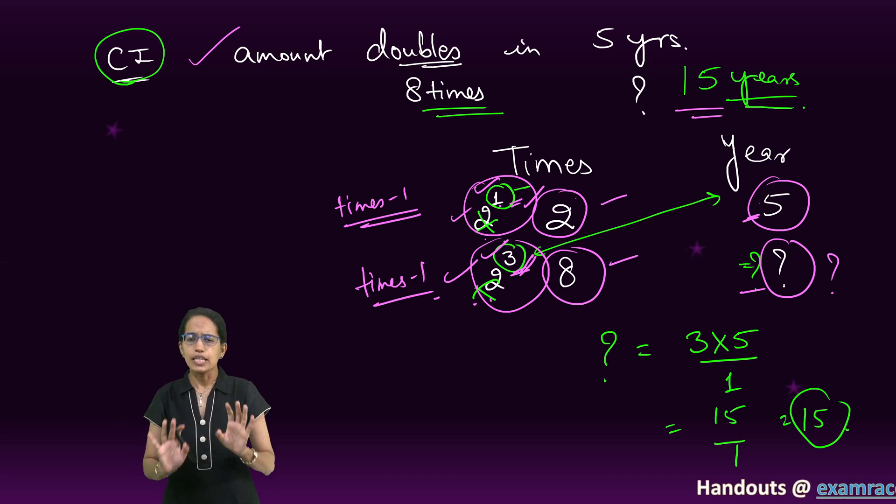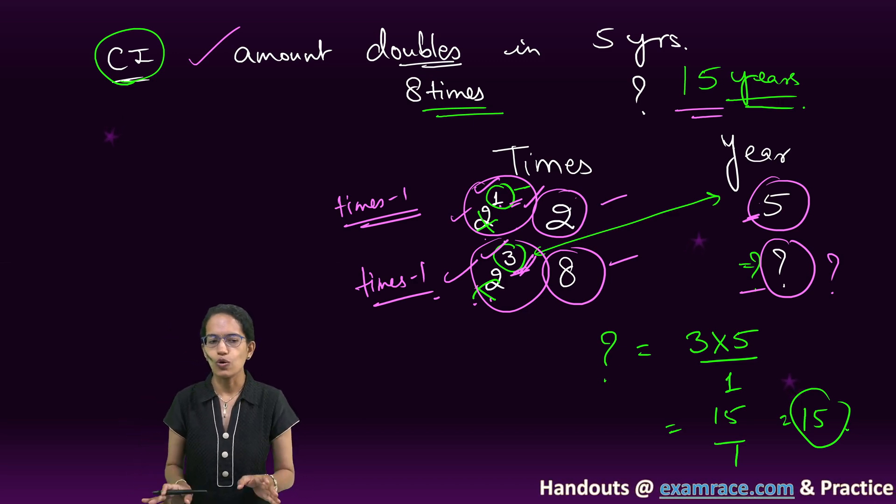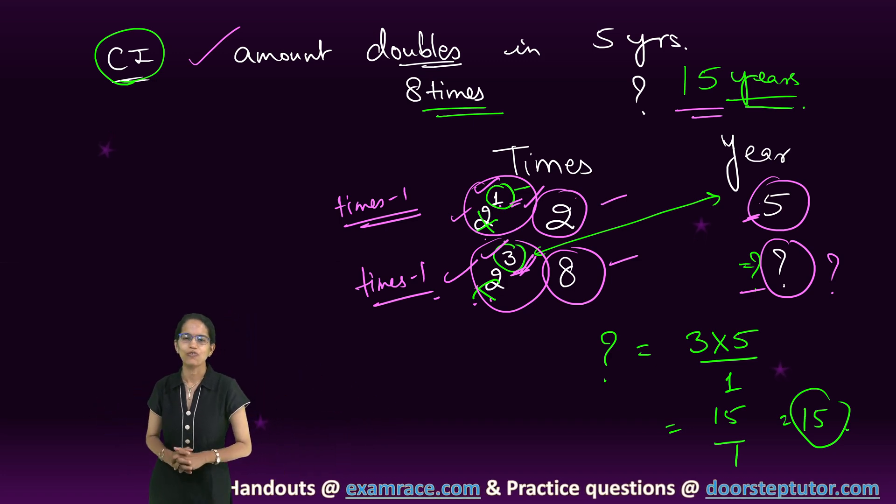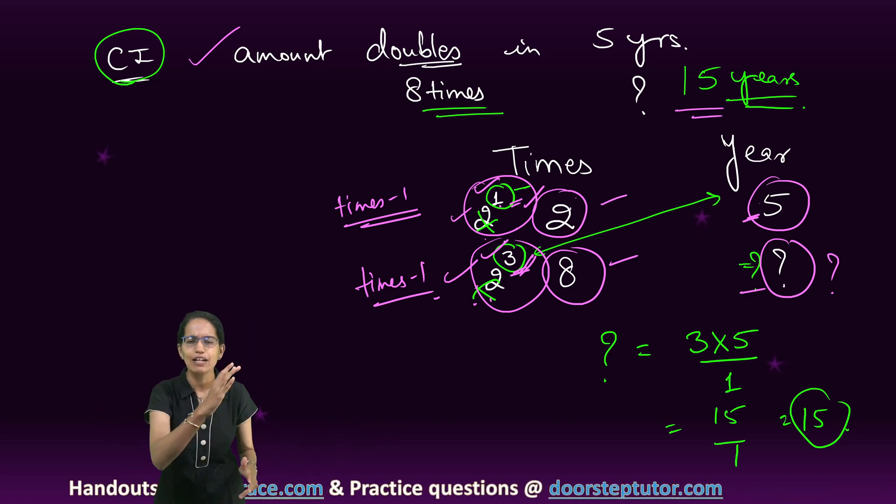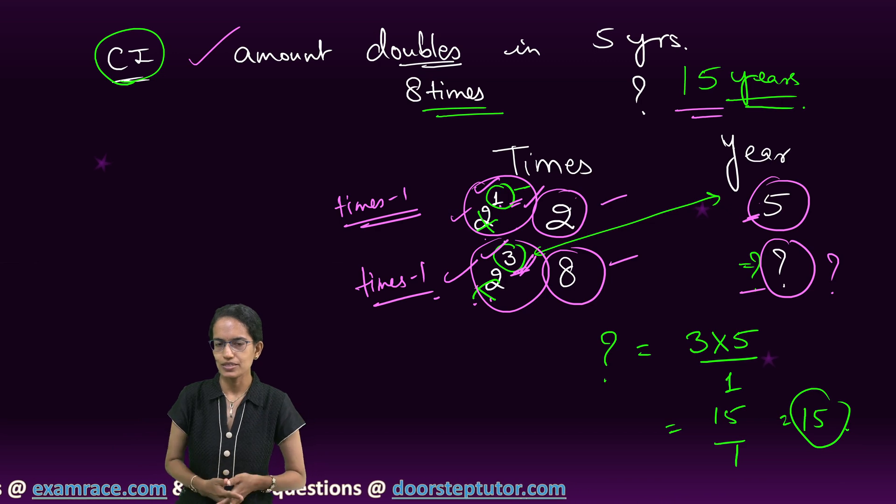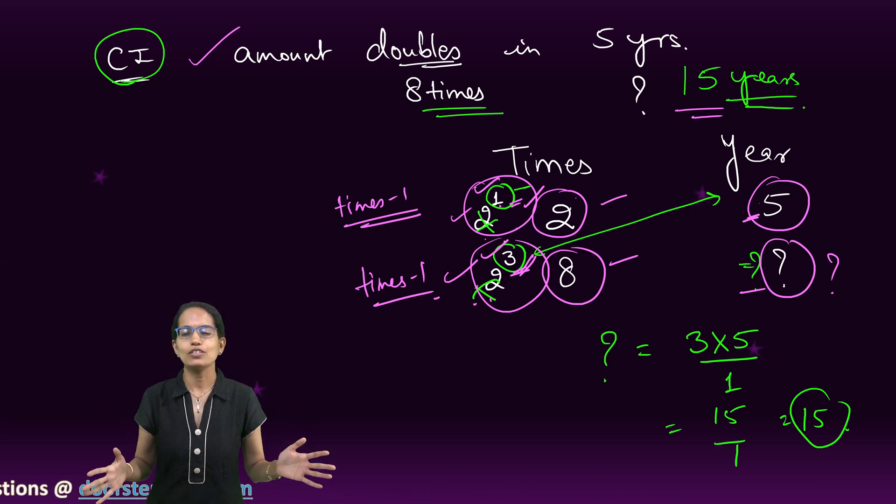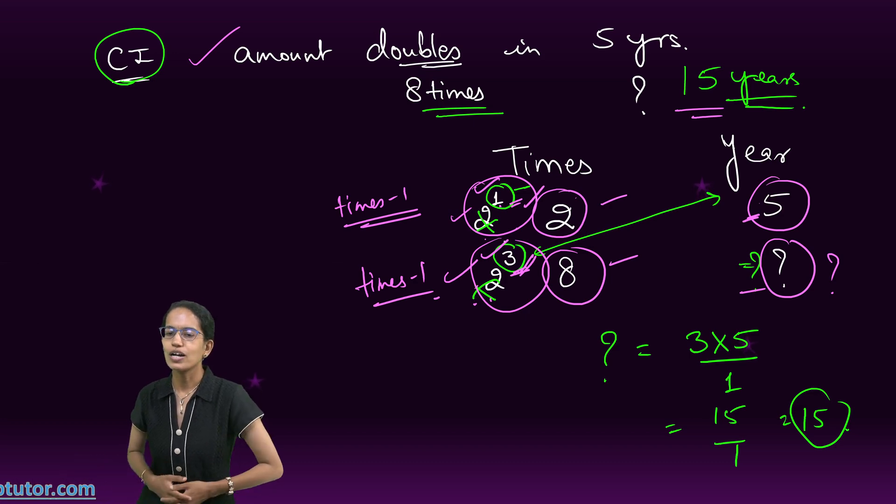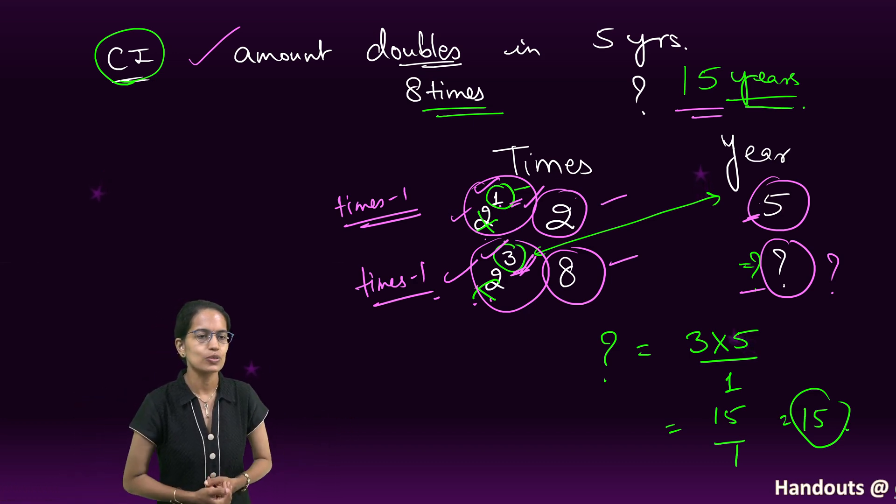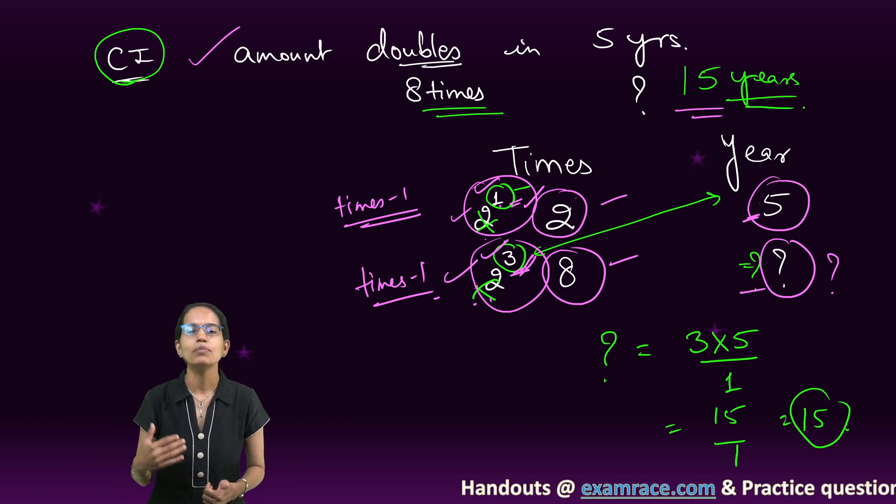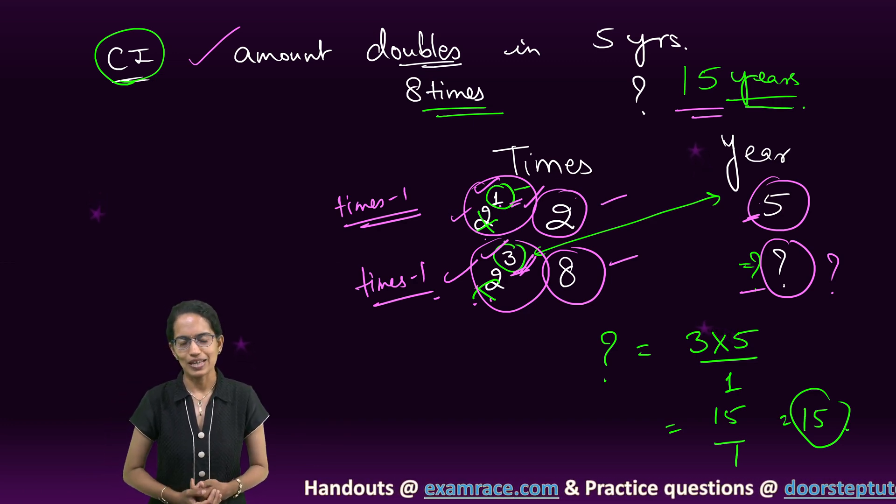And with just that difference, we can solve the questions of compound interest. This was one of the quick tricks for compound interest problems. Very helpful for most of your aptitude examinations. Specifically, when you are running short of time. If you are solving it for definitely a long answer question, you can go by the formula and have the complete question solved. But when you are working on MCQs, running short of time, this is one of the good tricks that you can apply.